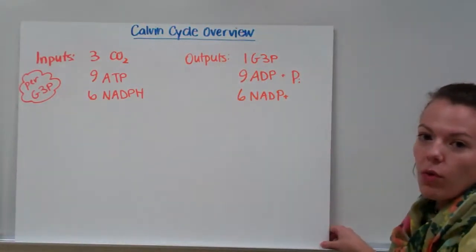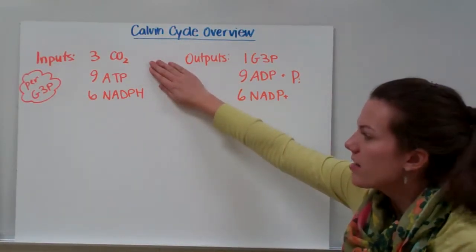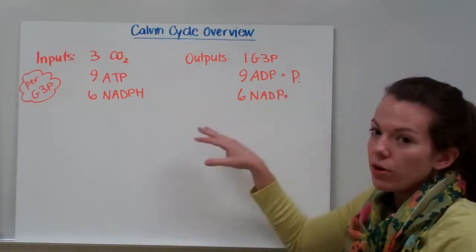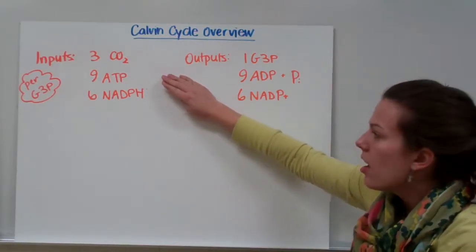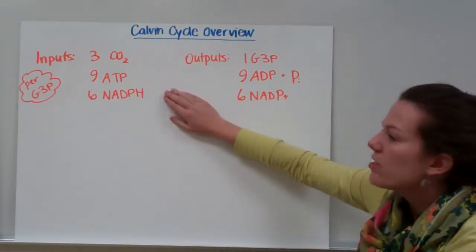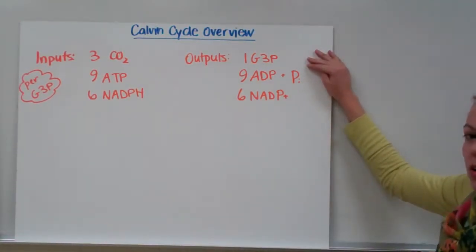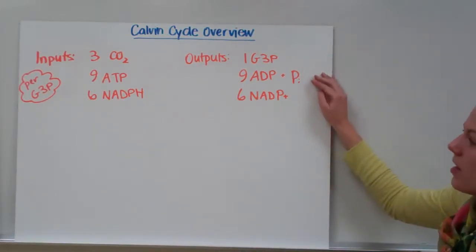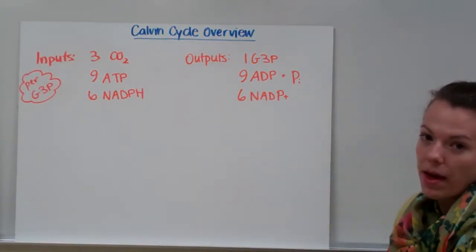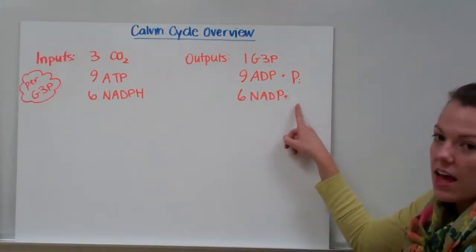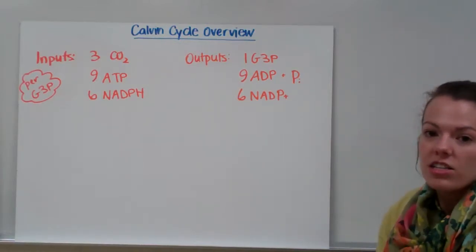Finally, let's do an overview of what we put in the Calvin cycle and what we get out of the Calvin cycle. We input three carbon dioxide per turn of the Calvin cycle, per G3P. We also have to use nine ATP. That energy is used to rearrange our carbons. And then we use six NADPHs. We use that to get our hydrogens to add on our CO2s to make sugar. Our outputs are one G3P, nine ADP and inorganic phosphates because we're breaking down those ATP to get energy to power the cycle. And we also have six NADPs because we've taken the hydrogen off of them and added them onto the carbon to make our G3P or PGAL.